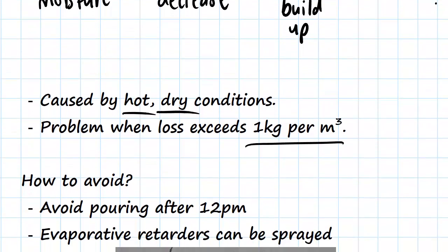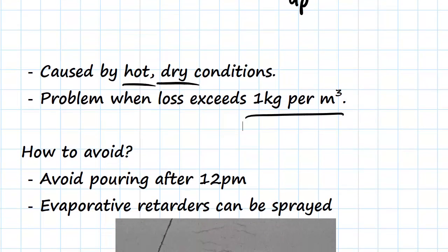So how can we avoid it? We can avoid it by firstly choosing our time appropriately. Generally, try to avoid pouring after 12 p.m. because this is when the day is going to be the hottest and the ground is going to be the hottest. So by pouring in the morning, especially in the summer months or when it's really hot, you're going to be reducing that moisture loss.